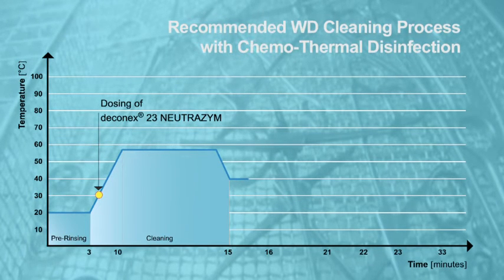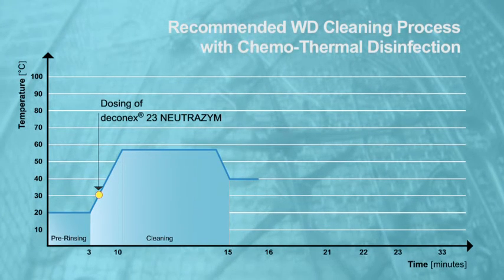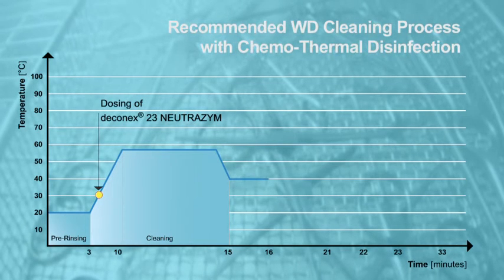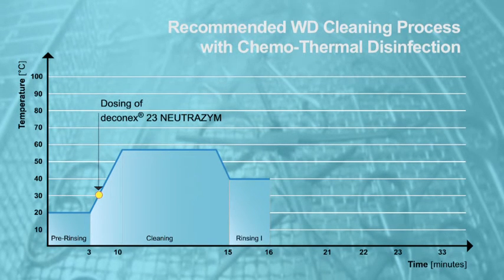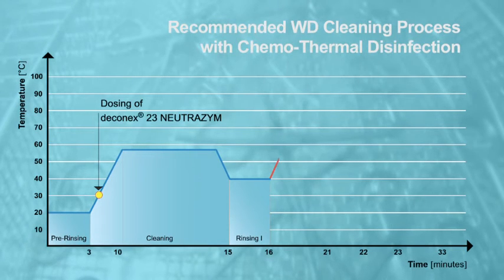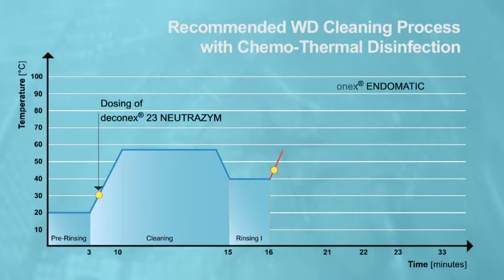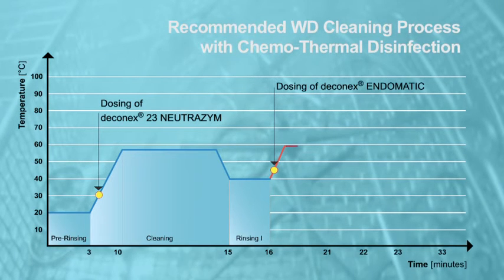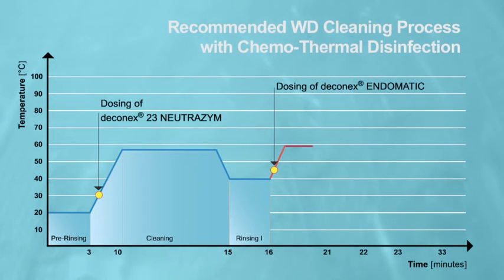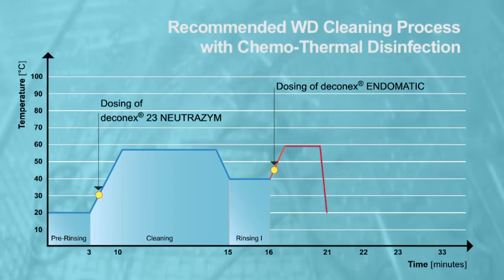This active cleaning step is commonly followed by an intermediate rinse with warm water for approximately one minute. The chemothermal disinfection step, including the dosing of Deconnex Endomatic at approximately 45 degrees Celsius, is performed at 58 to 60 degrees Celsius for five minutes.